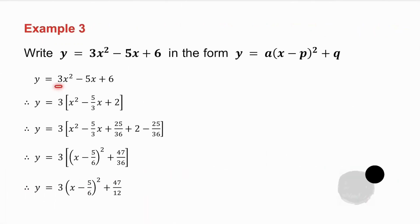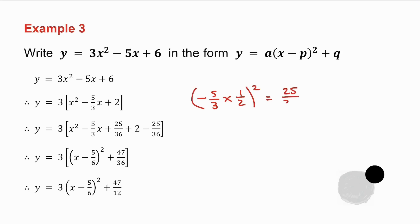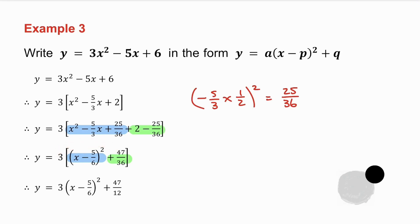The first thing to do is realize that x squared has a coefficient, so we take out the 3. We take the coefficient of x which is minus 5 over 3, halve it and square the answer — getting 25 over 36. We add 25 over 36 and subtract 25 over 36. The first three terms give a perfect square, we collect the last two terms, then multiply the 3 into the bracket to get the parabola rewritten in turning point form.